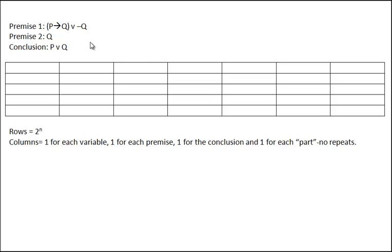The first thing we do to build the table, once we have the rows, is start by putting in the variables. Out of tradition, p always goes first and q always goes second. Then we have to put in the rest of the parts — specifically, the premises and the conclusion.